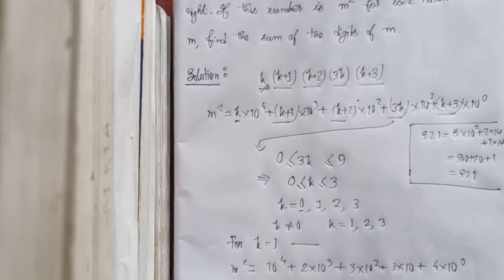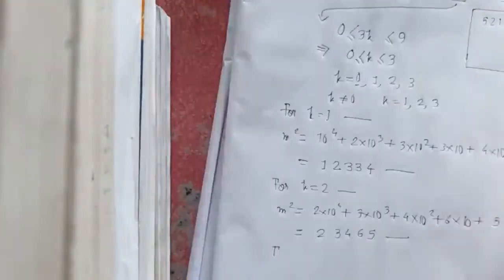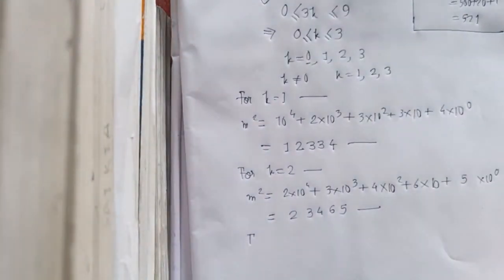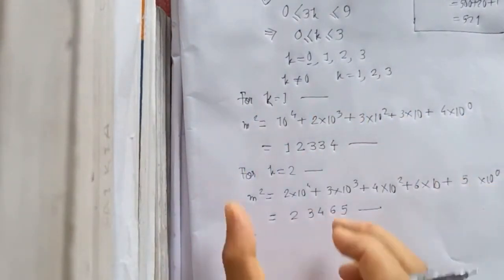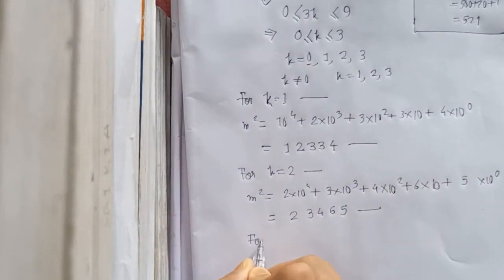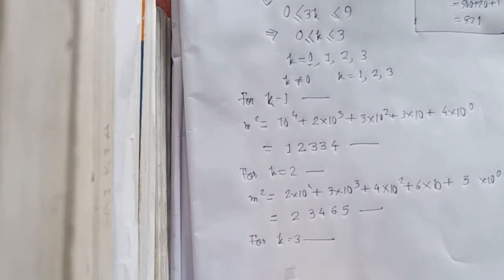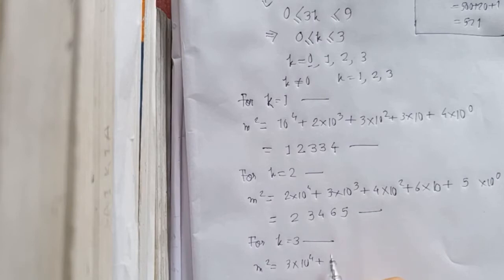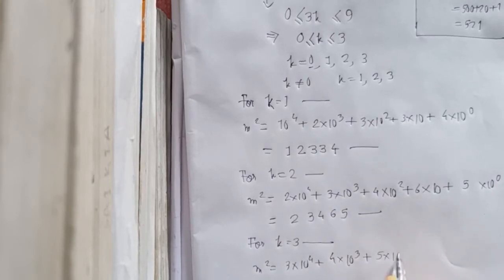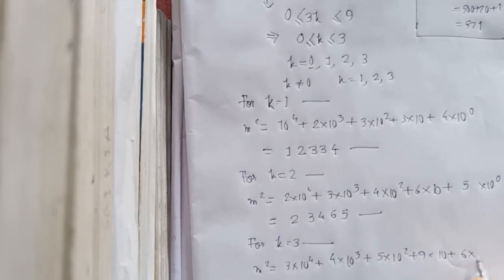Okay, so for k equal to 3, m squared equals 3 times 10 to the power 4, plus 4 times 10 cubed, plus 5 times 10 squared, plus 9 times 10, plus 6 times 10 to the power 0. The digits are 3, 4, 5, 9, 6 — so m squared equals 34596.